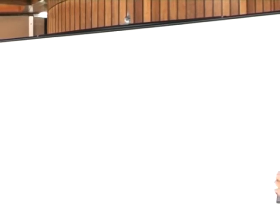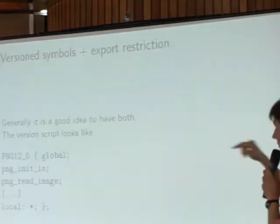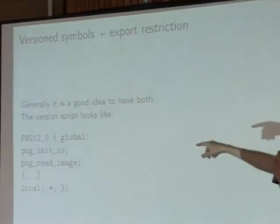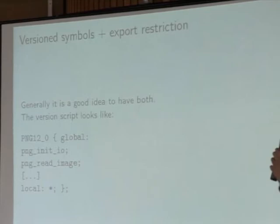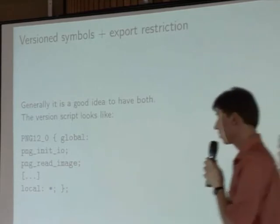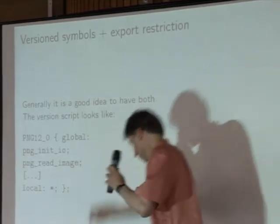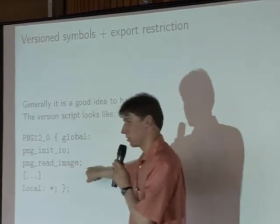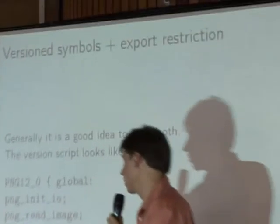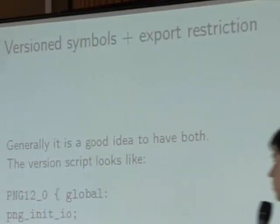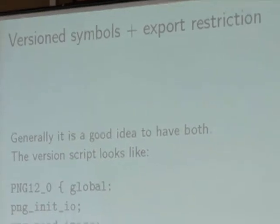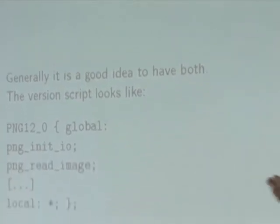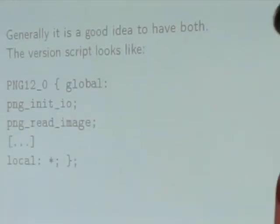To go even further, you can use the same version script to version symbols and restrict the list of exported symbols. With the global keyword you specify which symbols must be exported, and with the local keyword those that don't need to be, and you end up with a clean library that upgrades smoothly.